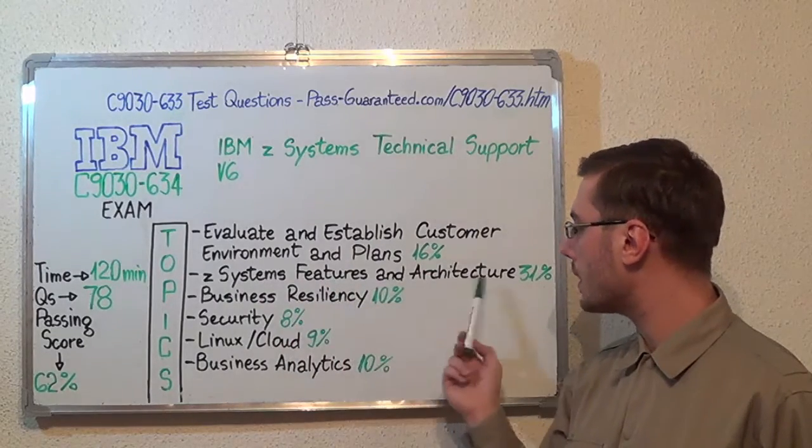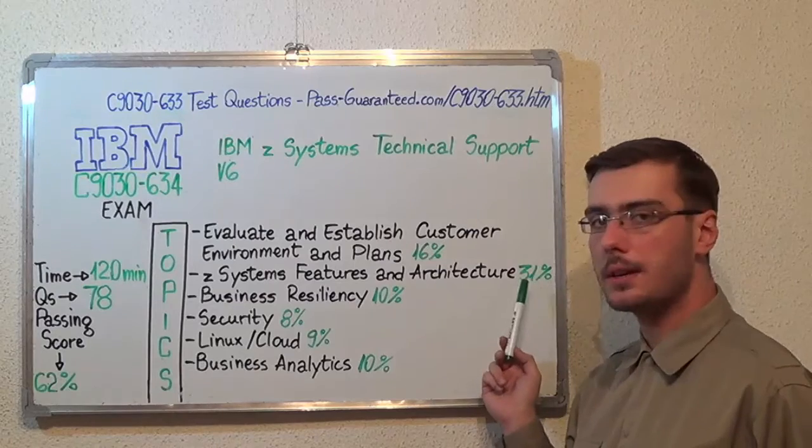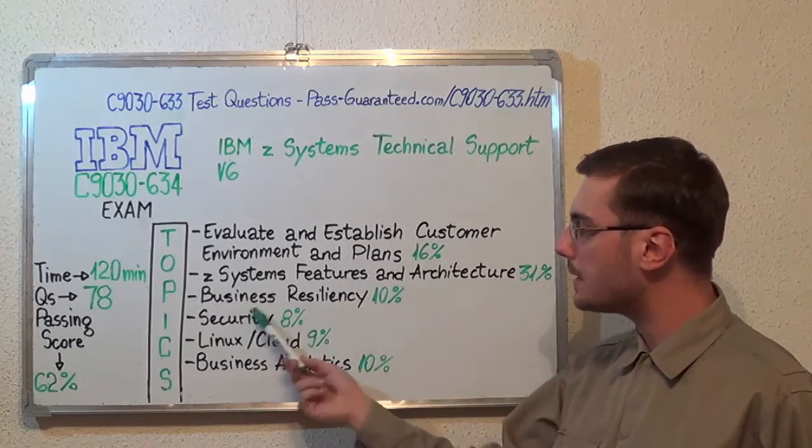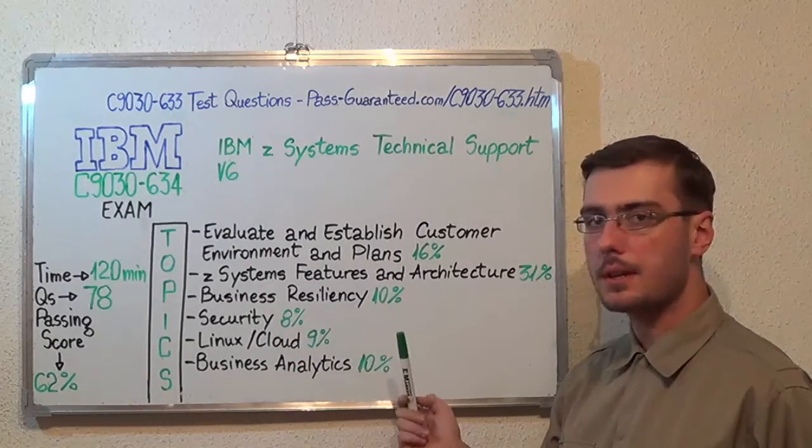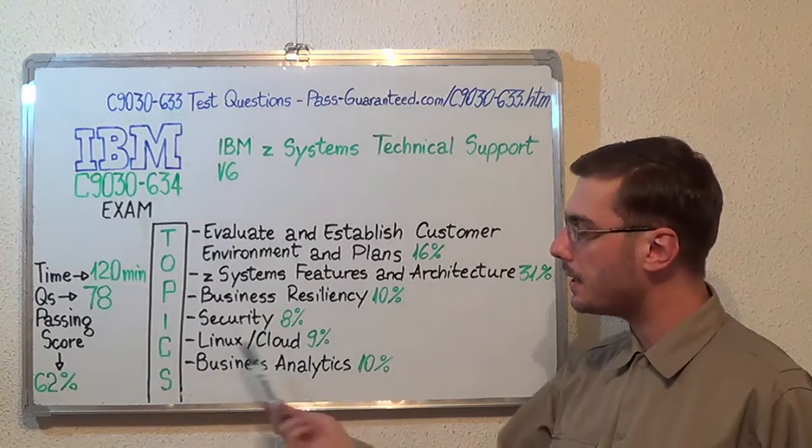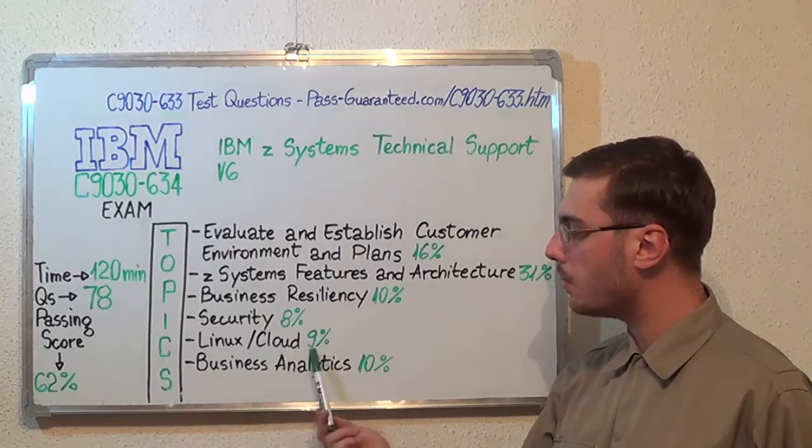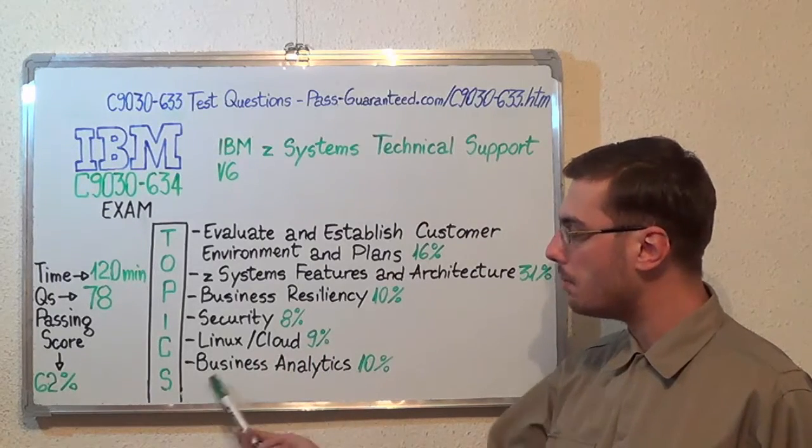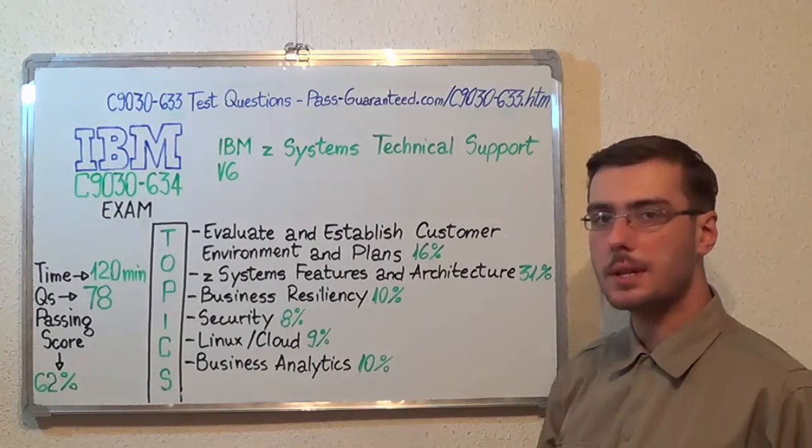Z-Systems Features and Architecture with 31%, after that Business Resiliency with 10%, after that Security with 8%, next Linux-slash-Cloud with 9% and the last one Business Analytics with 10%.